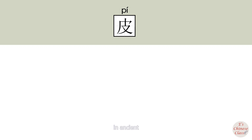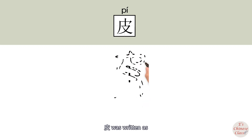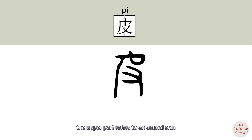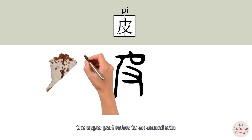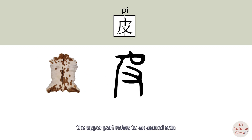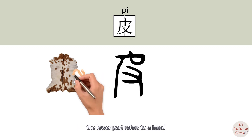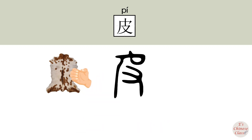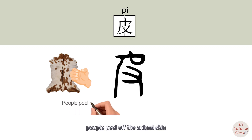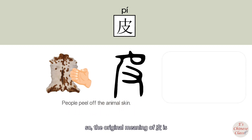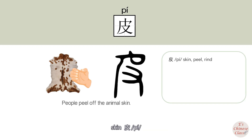In ancient script, 皮 was written with the upper part referring to an animal skin and the lower part referring to a hand. This character indicates that people peel off the animal skin. So the original meaning of 皮 is skin, 皮.